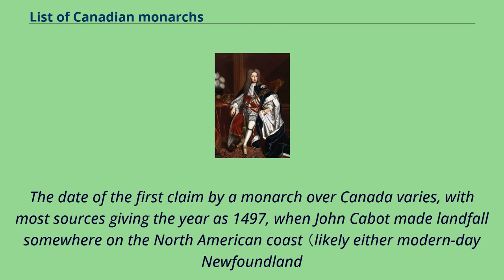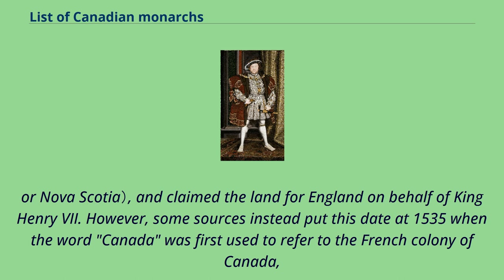The date of the first claim by a monarch over Canada varies, with most sources giving the year as 1497, when John Cabot made landfall somewhere on the North American coast, likely either modern-day Newfoundland or Nova Scotia, and claimed the land for England on behalf of King Henry VII.